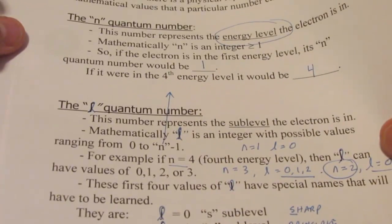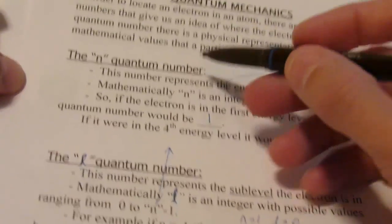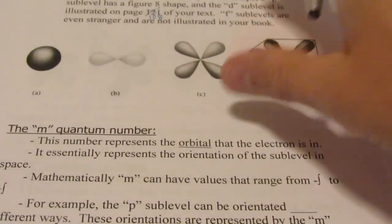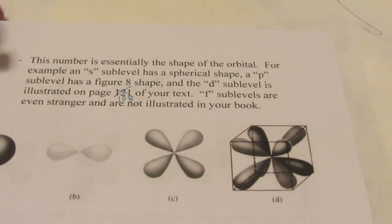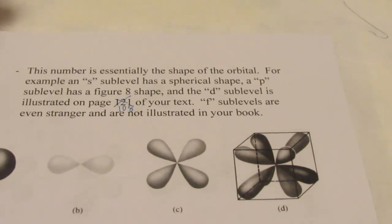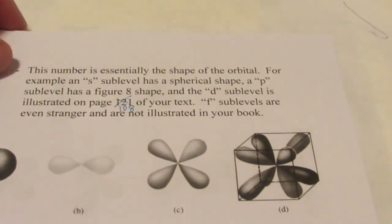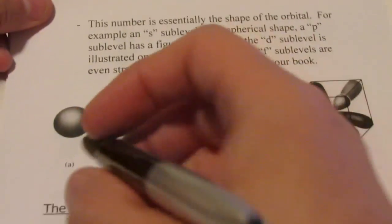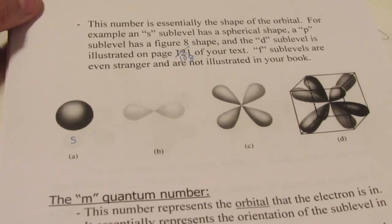Alright, so we have the N and the L quantum number. N is the energy level and L is the sublevel. Now the L quantum number is the shape of the orbital. For example, an S sublevel has a spherical shape.